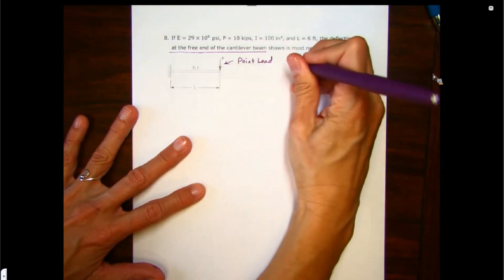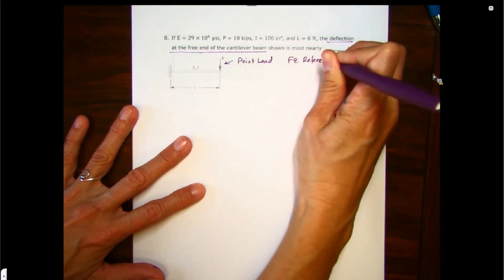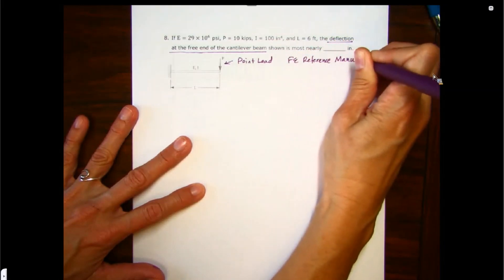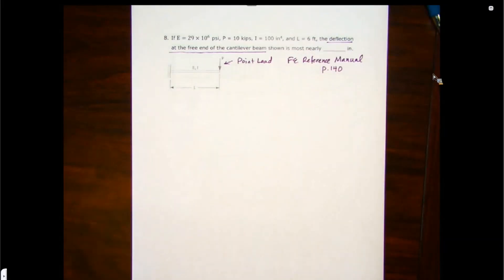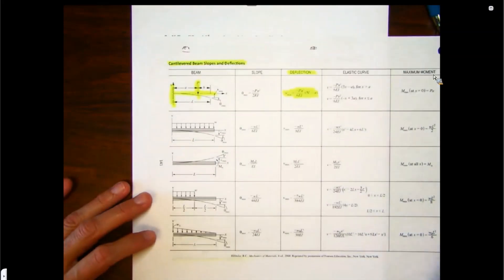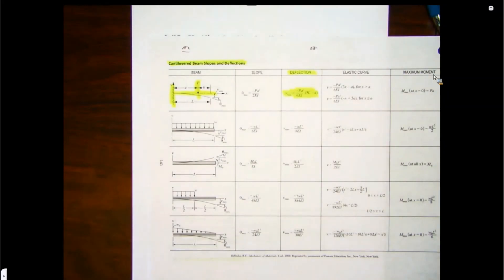So let's go ahead to that FE reference manual. They have a lot of nice diagrams on these starting on page 140. I'm going to show you a couple of those and how to use them. This is actually page 141 is where the cantilever beams start.